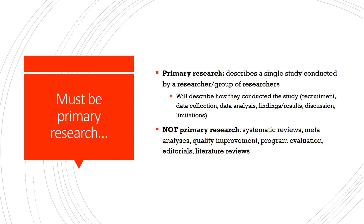Your first guideline is that it must be primary research. Primary research describes a single study conducted by a researcher or group of researchers. That article, if it's primary research, is going to tell you a story — it's going to describe how the authors conducted a study. They'll start off with a little bit of background saying why you should read this article, what the issue is, and then they'll go into a gap in the literature, with aims and research questions or hypotheses.